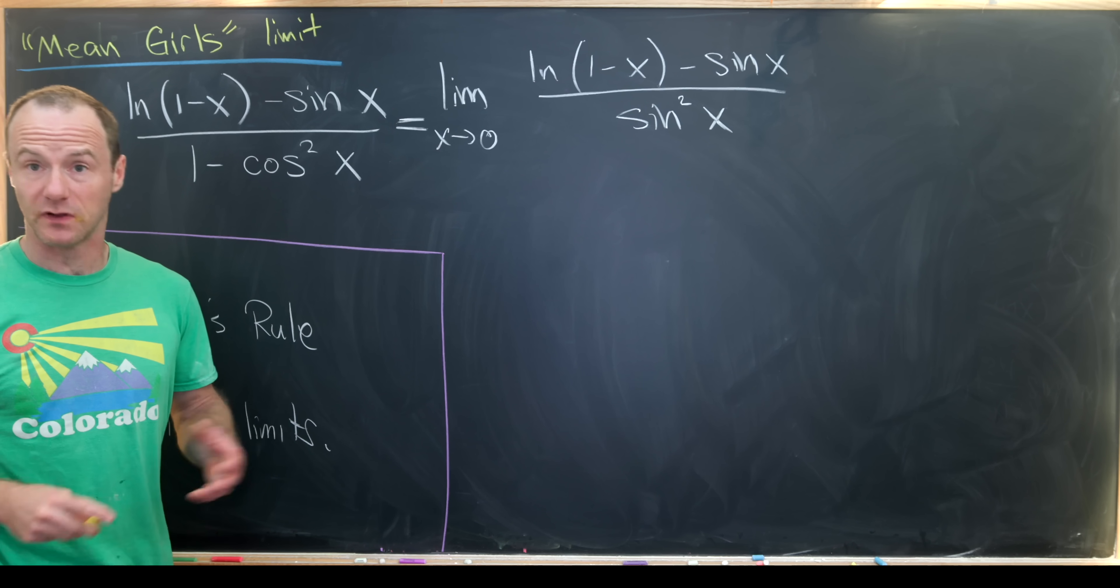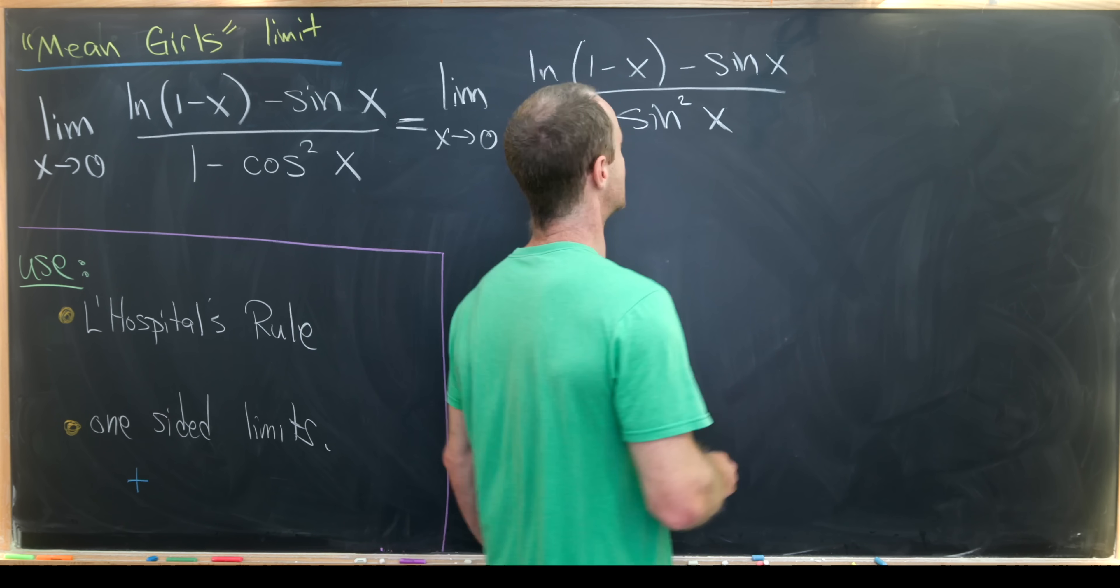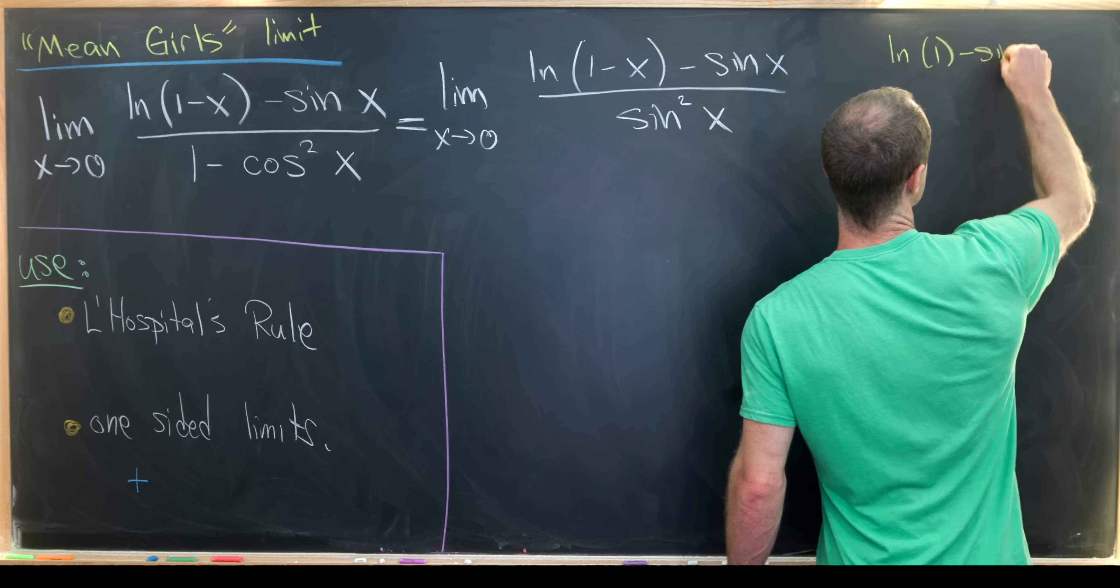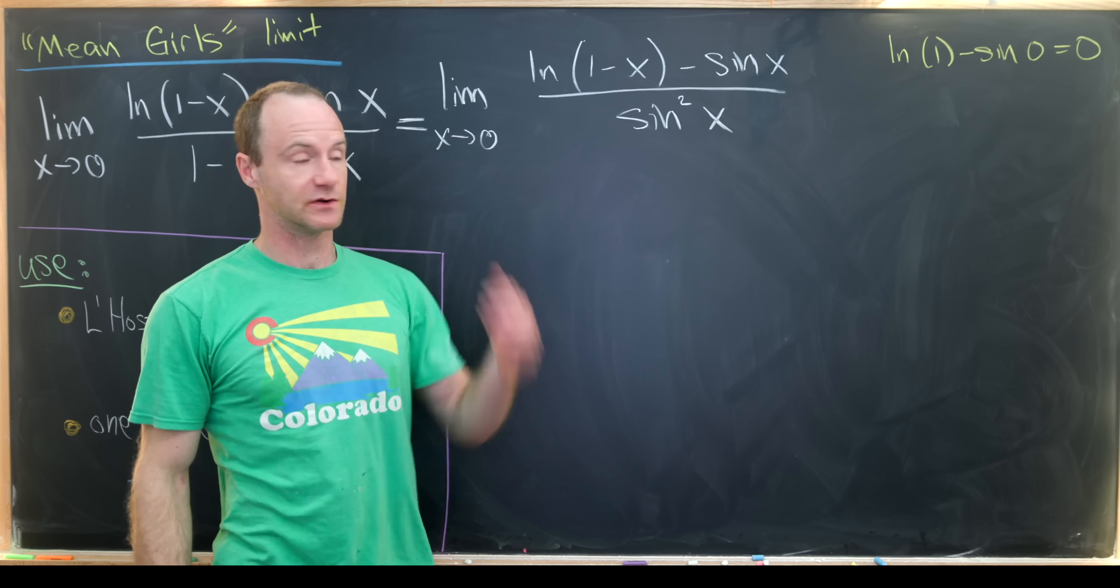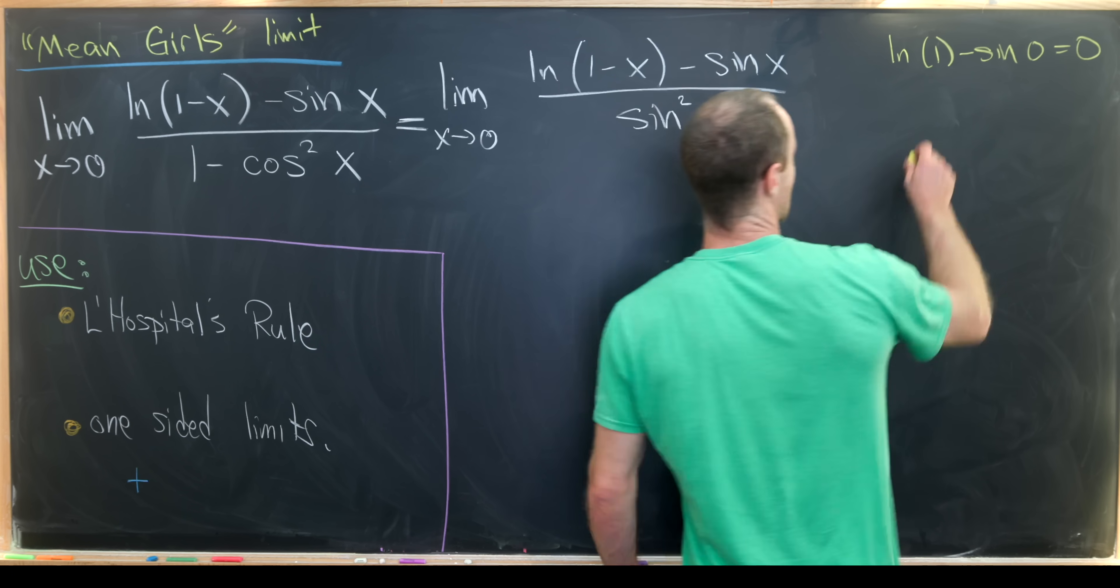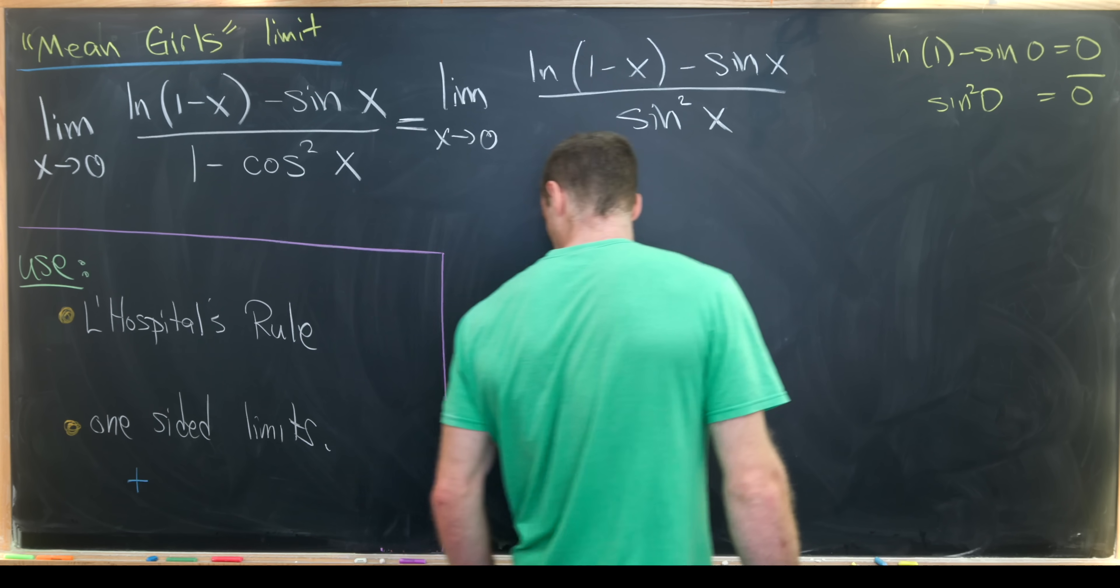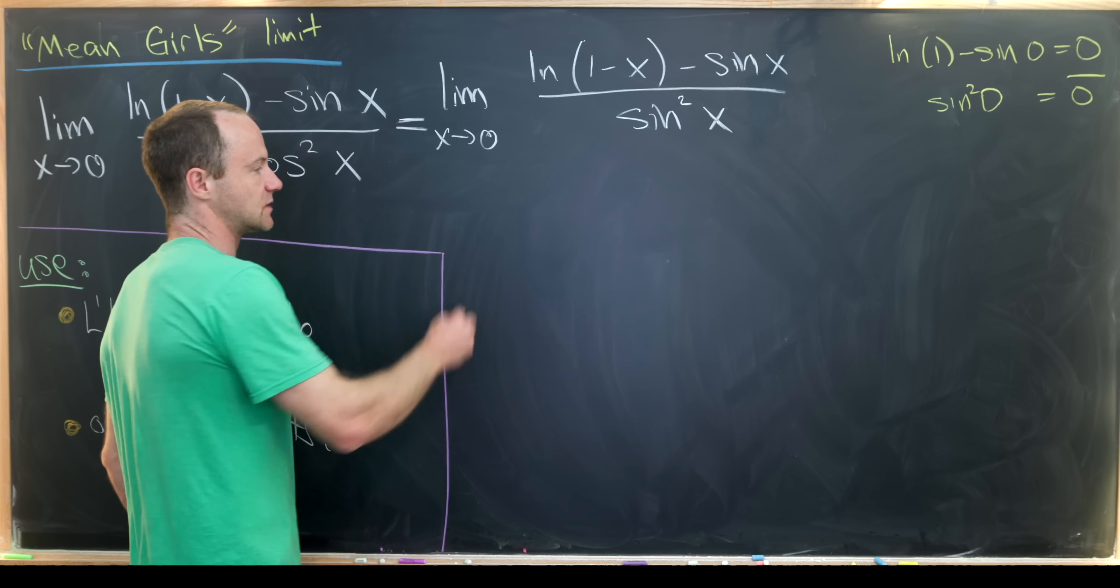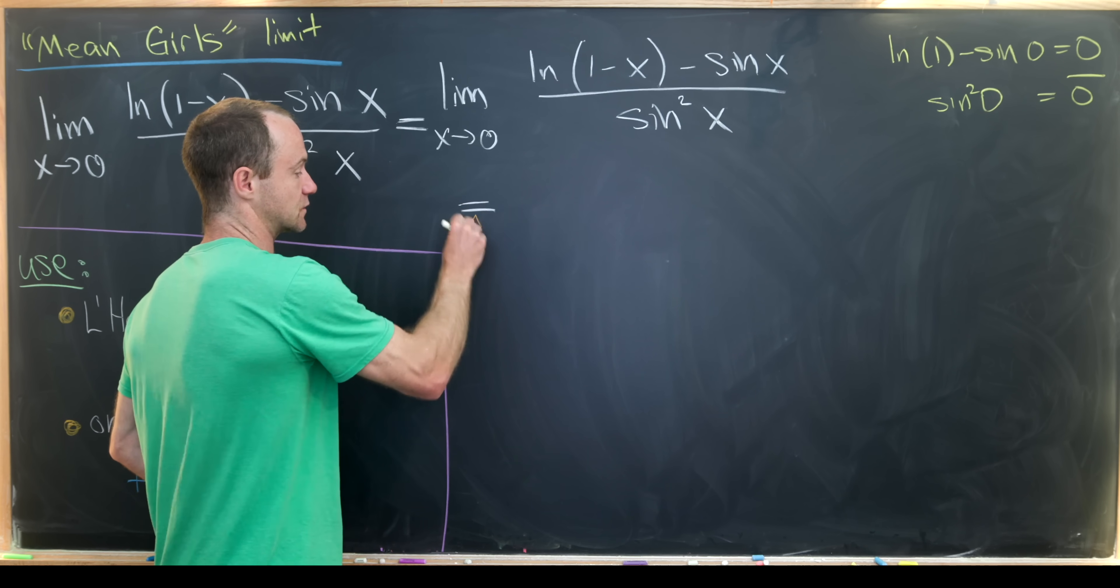Now if we plug x equals 0 into the numerator and the denominator, you'll notice that in the numerator we get the natural log of 1 minus the sine of 0. Natural log of 1 is 0, sine of 0 is 0. And then in the denominator we get the sine squared of 0, but that's also 0. So we have an indeterminate form of type 0 over 0, and that motivates us to use L'Hopital's rule.